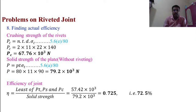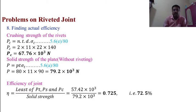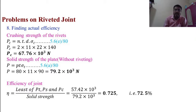Actual efficiency = least value of (PT, PS, PC) / solid strength = 57.42 × 10³ / 79.2 × 10³ = 0.725, which is 72.5%. This is the actual efficiency of the riveted joint.